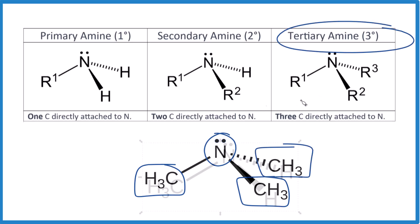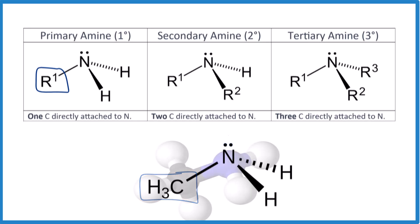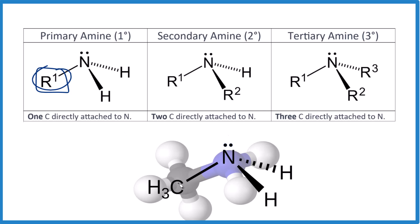Do another one. Pause and identify this amine. You can see here we have that one carbon group and then hydrogens — there's that carbon group. That's a primary amine. Here's our nitrogen, here's that carbon group, and then we have these two hydrogens.